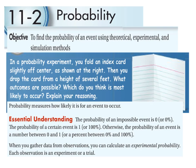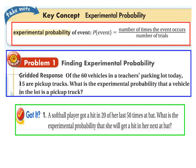In this case, each time we drop that index card, it would be a trial for that probability. When calculating experimental probability, here's our formula. We take the number of times that the event occurs divided by the number of trials. In problem 1, there are 60 vehicles in the teacher's parking lot today. 15 are pickup trucks.